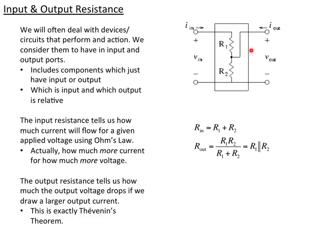Now, if I consider the output resistance, you might think that it should just be R2, but in fact, it's not. So, imagine that we have a voltage supply here, and it creates a voltage drop.